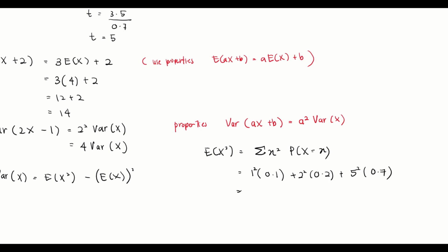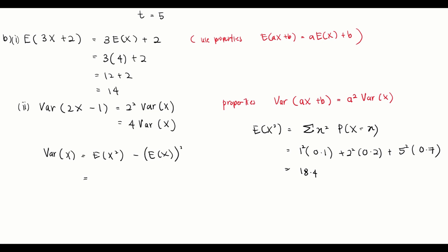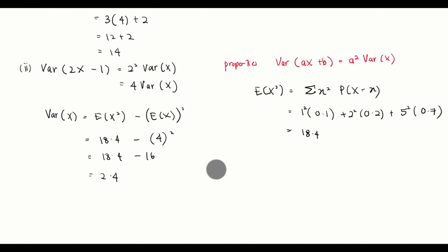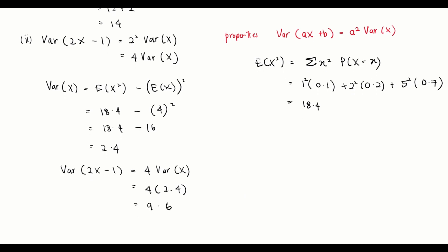Calculating this gives E(X²) = 18.4. Substituting into the variance formula: Var(X) = 18.4 − 4² = 18.4 − 16 = 2.4. Now for Var(2x − 1) = 4 × Var(X) = 4 × 2.4 = 9.6.